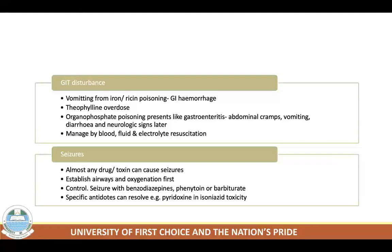Common agents causing seizures include anticholinergics, bupropion, carbon monoxide, cocaine, insulin overdose, isoniazid overdose, and oral hypoglycemics. Almost any drug or toxin can produce seizures. Delayed seizures during recovery may signal sedative-hypnotic or alcohol withdrawal. Seizures are managed first by establishing airway and oxygenation. Patients with status epilepticus must be managed aggressively. Some seizures are particularly difficult to control, such as those with theophylline or cocaine overdose.